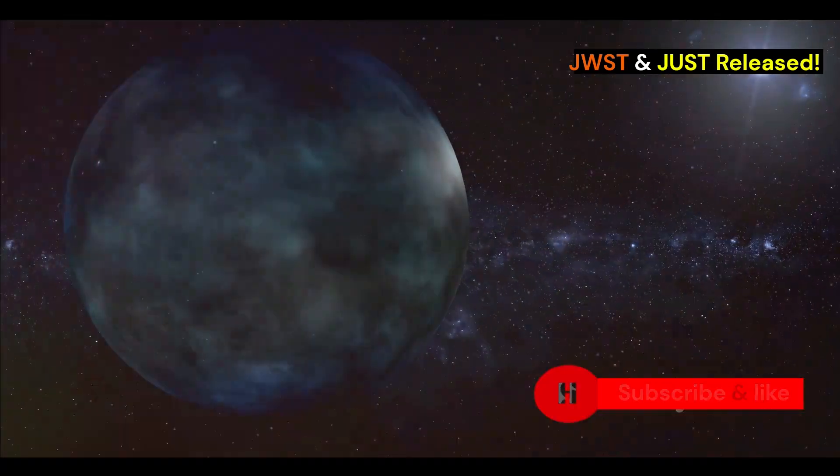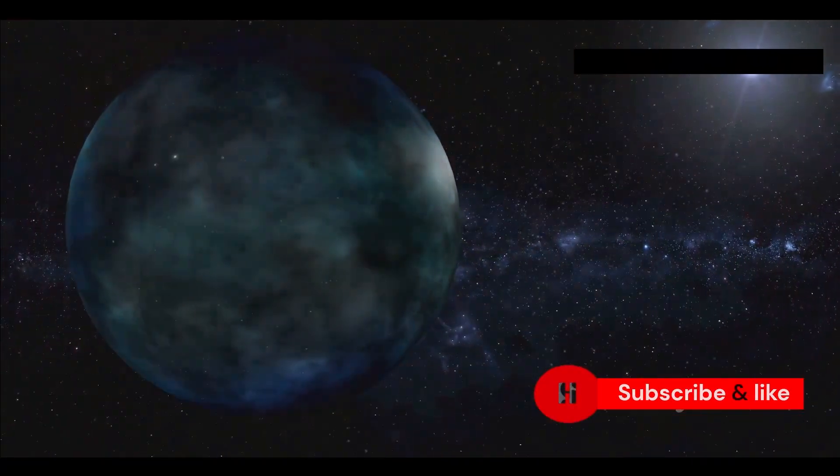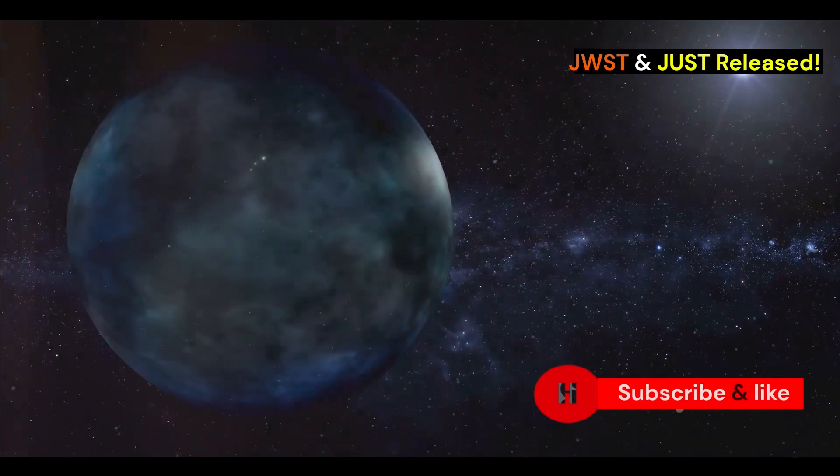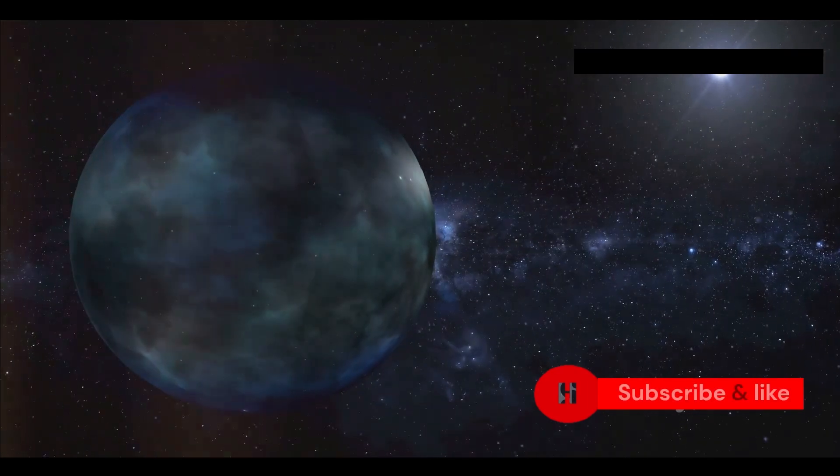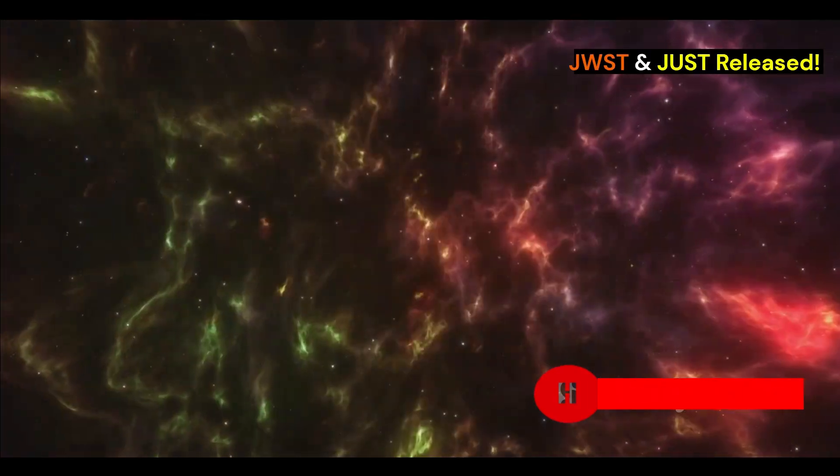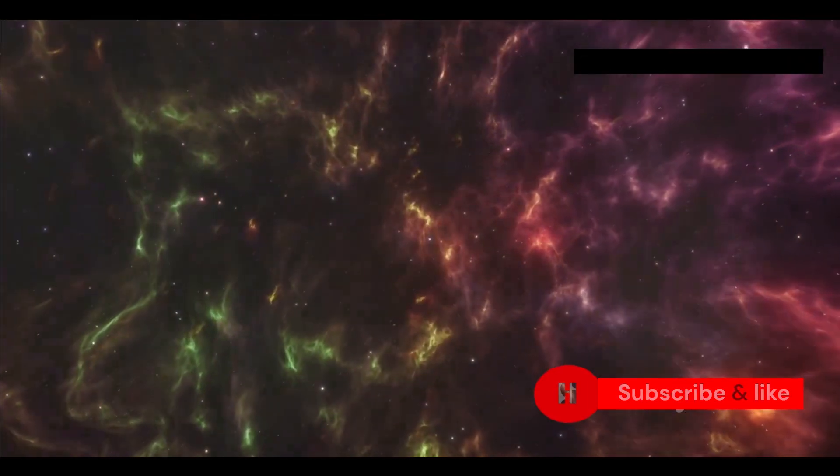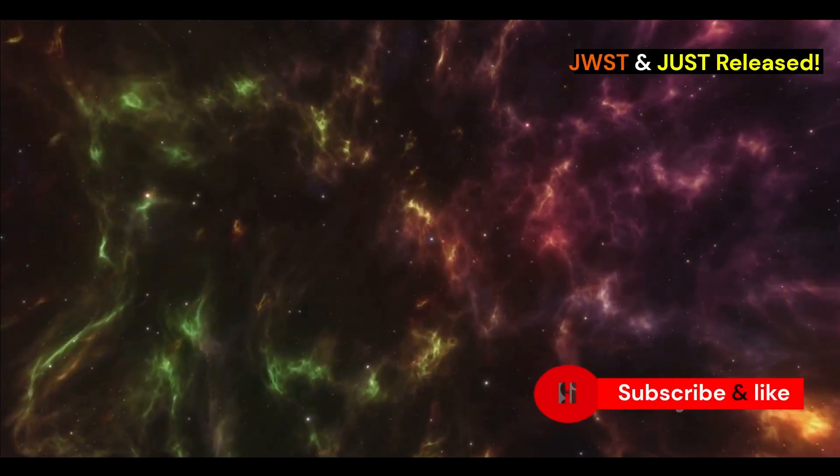One of the first exoplanets that JWST looked at was WASP-96b. It's a giant gas planet that's really hot and about 1,150 light-years away from Earth.